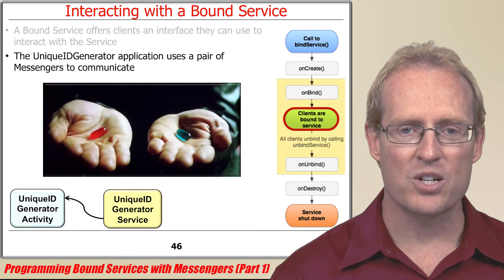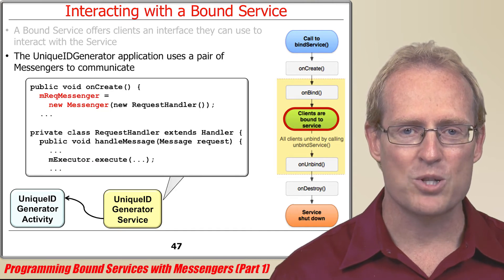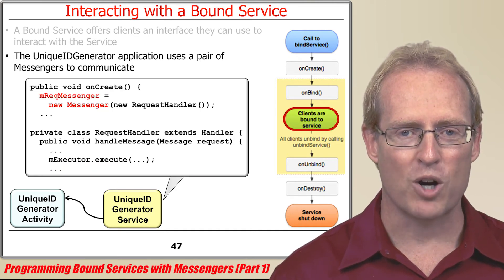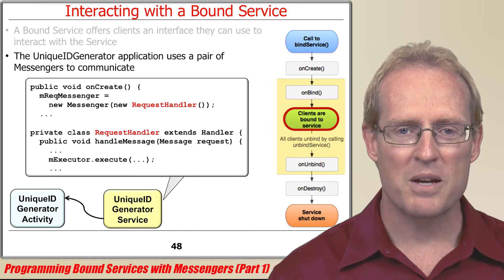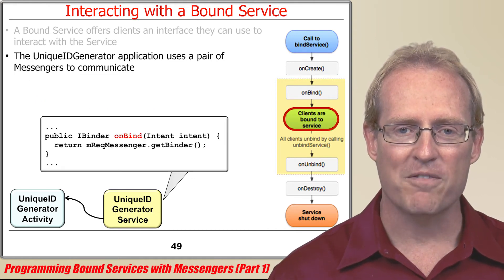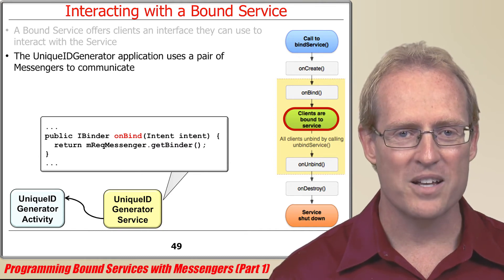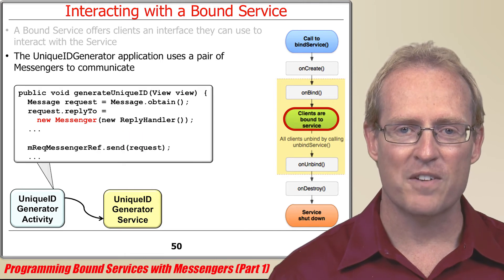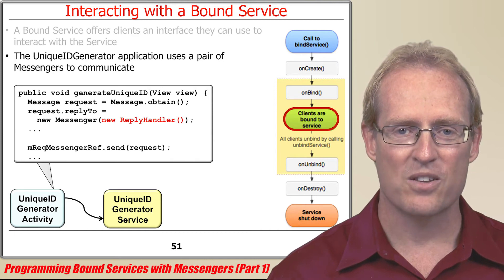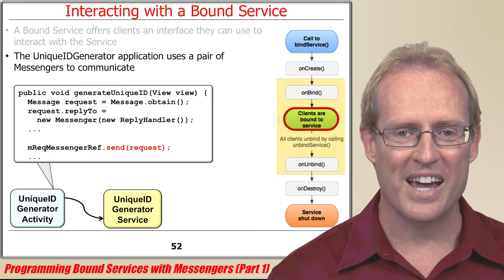The unique ID generator application uses a pair of messengers to communicate. The unique ID generator service defines a request messenger that encapsulates a request handler. This messenger is passed to the unique ID generator activity by the onBind factory method and subsequently used to send a request to the service. Likewise, the unique ID generator activity defines a reply messenger that encapsulates a reply handler. This messenger is passed to the unique ID generator service as the replyTo field in the request message and used to send the unique ID back to the activity.